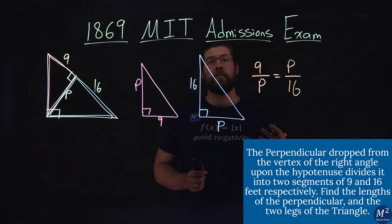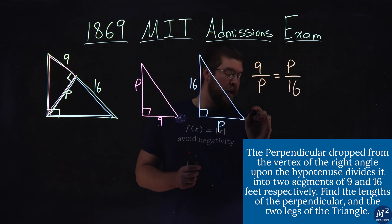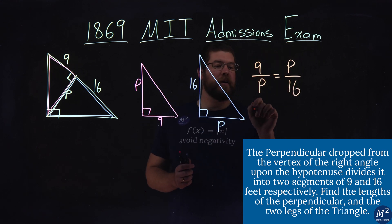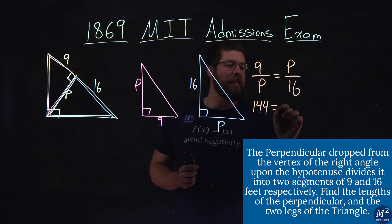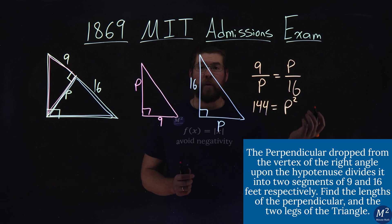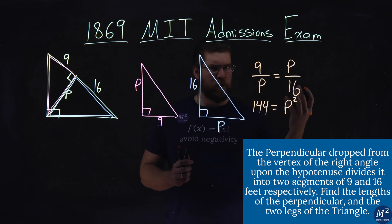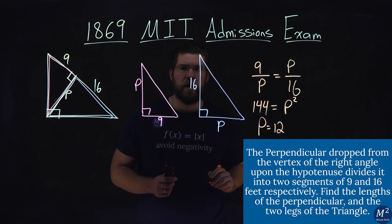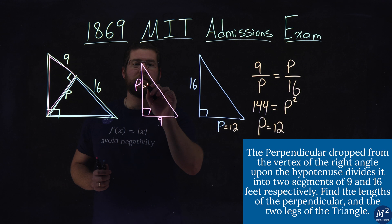Then from here we can cross multiply. 16 times 9 comes out to be whatever that's going to be, 16 times 9 is 144, and that's equal to p squared. Coming down from there we can take the square root of both sides, the positive square root, can't have the negative here, and p equals the square root of 144, which is 12.